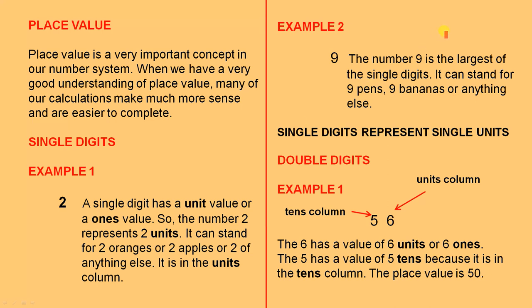Example 2: the number 9. The number 9 is the largest of the single digits. It can stand for nine pens, nine bananas, or anything else. Single digits represent single units. So, two represents two single units, and nine represents nine single units, etc.